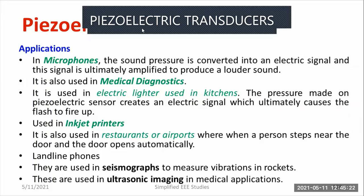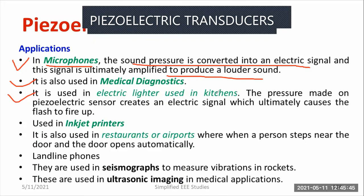What are the major applications of piezoelectric transducer? It is mainly used in microphones — the sound pressure is converted into an electrical signal, which is ultimately amplified to produce the loud sound. Then medical diagnosis and biomedical applications. Also, it is used in electric lighters in kitchens — the pressure made on the piezoelectric sensor creates the electrical signal, which ultimately causes the flash or fire.